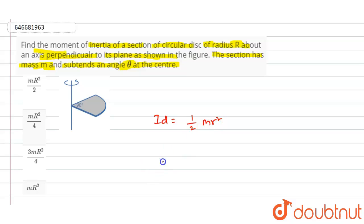And the mass of a quarter is m divided by 4. Let Iq be the moment of inertia of the quarter.